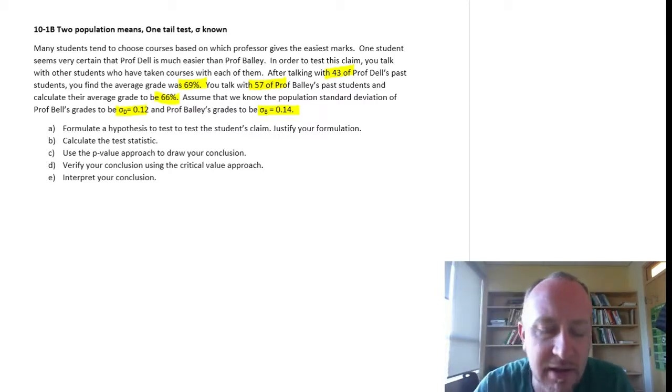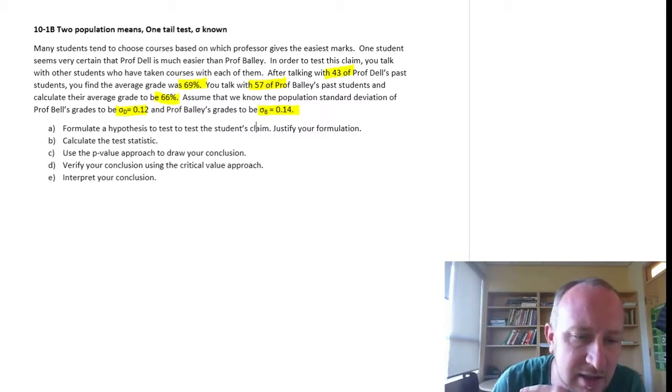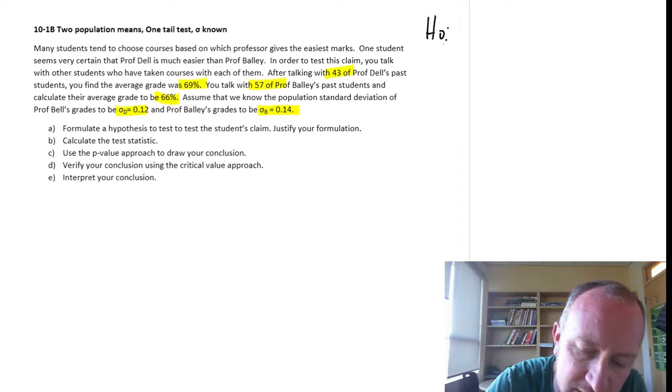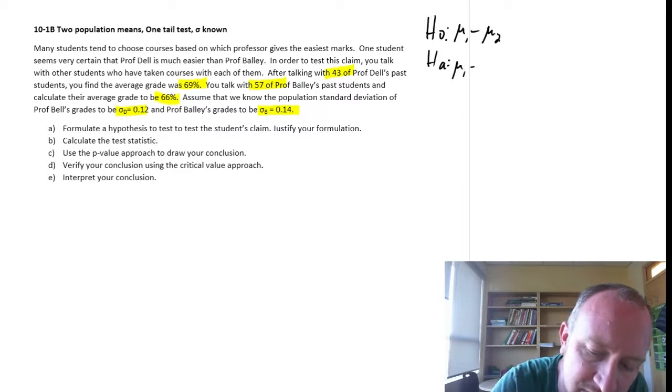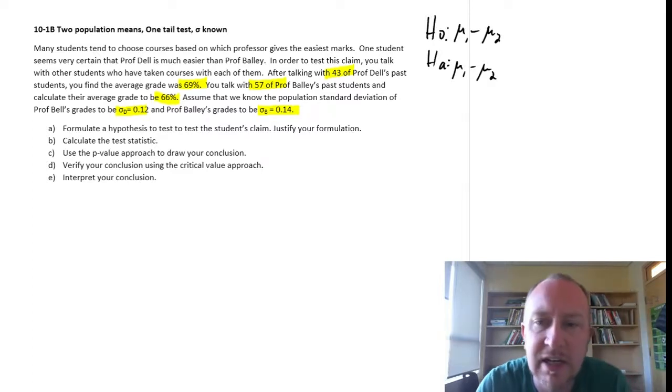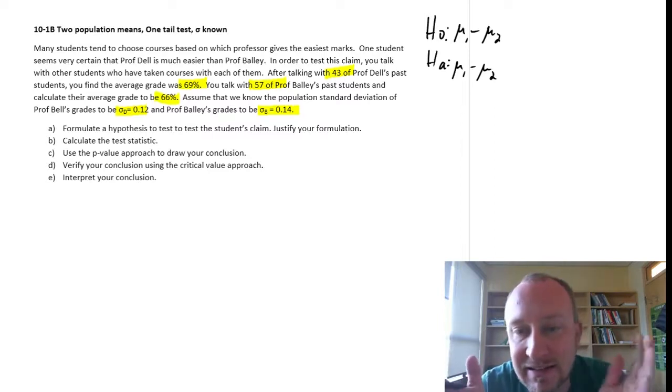So let's formulate our test and let's just get into it. We're going to be looking at a two population test. I'm going to formulate this as mu1 minus mu2. This is always how we can start with these. But then the next step is to determine is this an upper tail test or lower tail test.